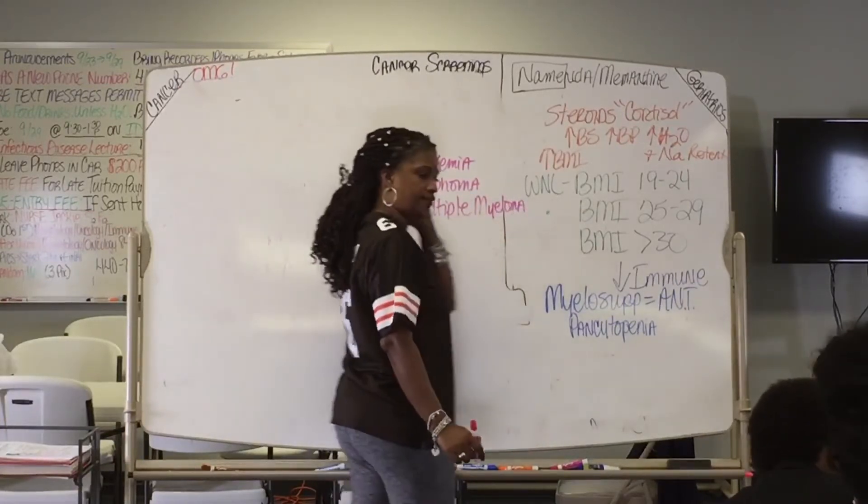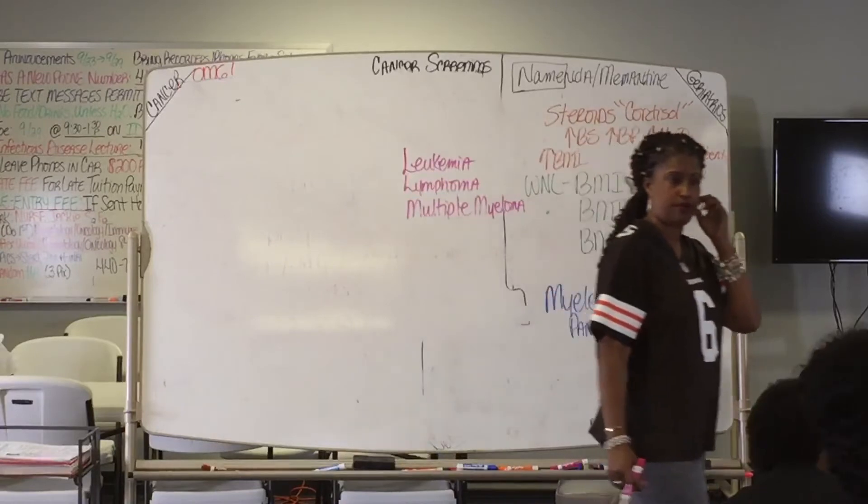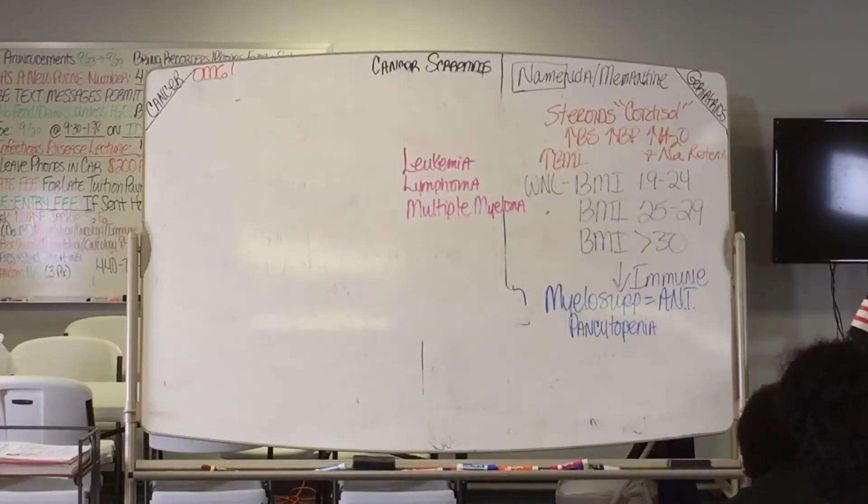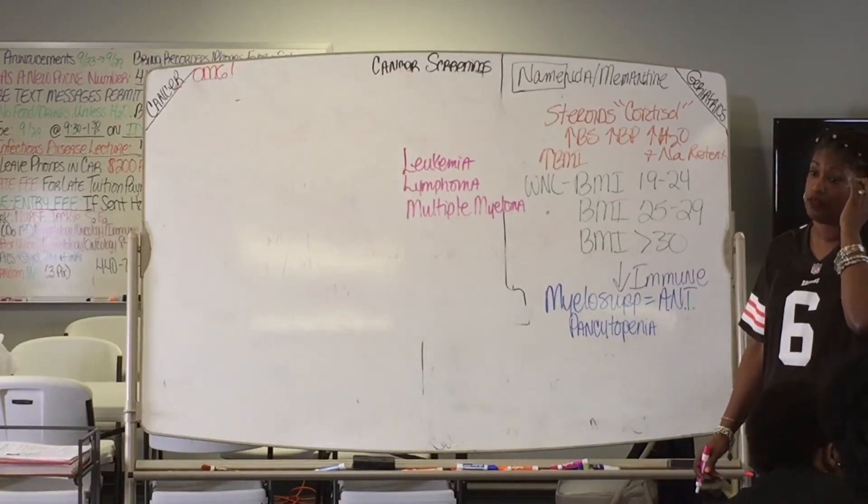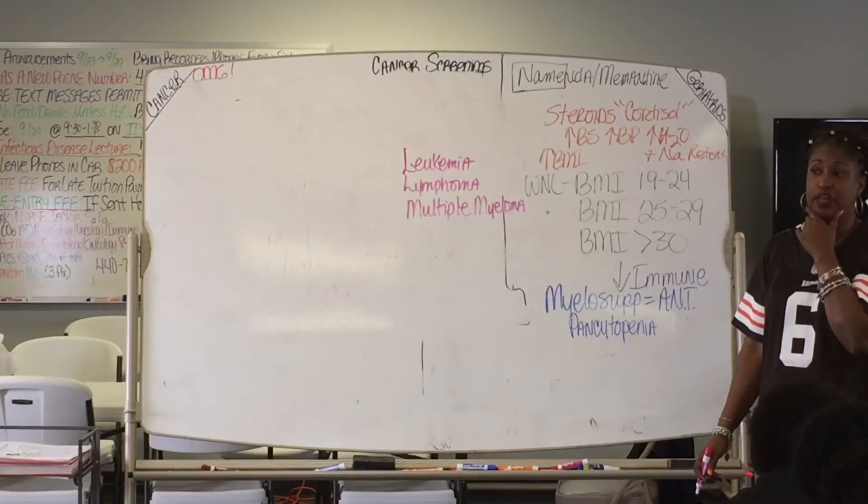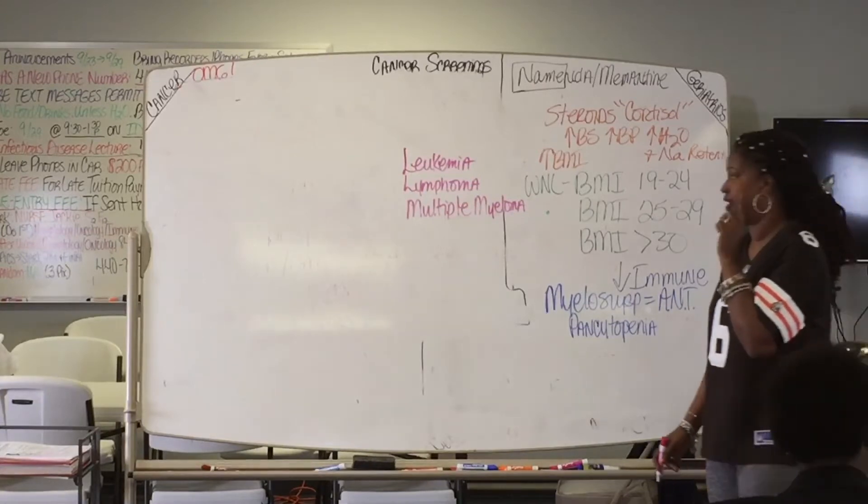So all of them have anemia, neutropenia, and thrombocytopenia. But with multiple myeloma, you have high calcium. That's the only difference between those three. Multiple myeloma, you have high calcium in the blood. Let me be real clear. High calcium is in the blood.